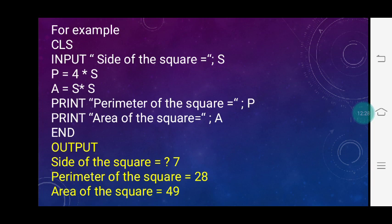Example: CLS, then input "side of the square"; s. P = 4 * s (perimeter of the square), A = s * s (area of the square). Then print "perimeter of the square"; P and print "area of the square"; A, then end. Output: side of the square = ? The user enters 7. Perimeter of the square = 28 (7 * 4 = 28) and area of the square = 49 (7 * 7 = 49).